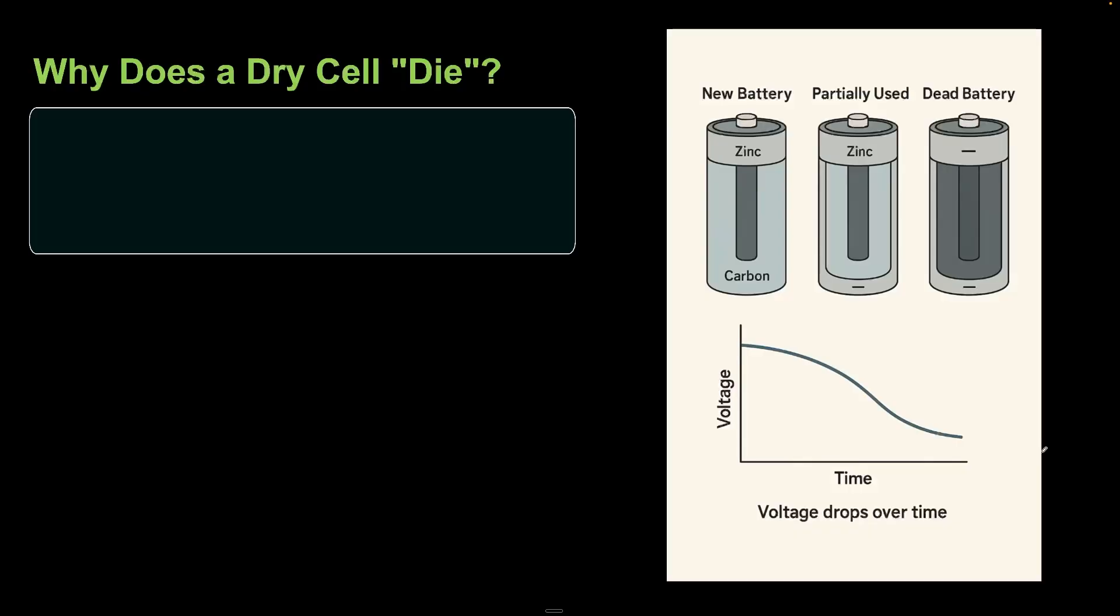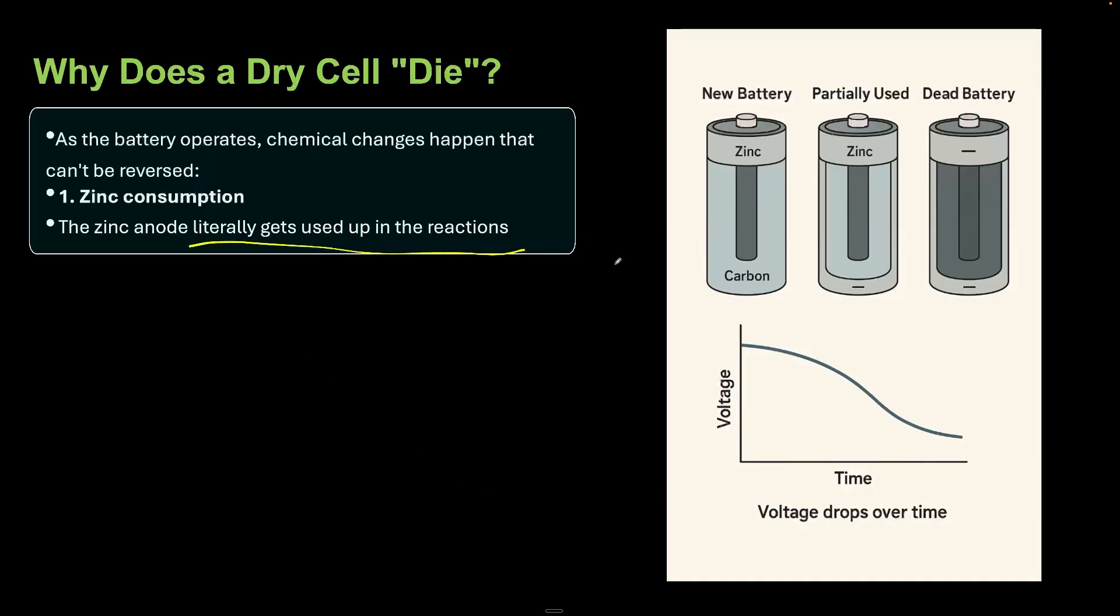Let's answer why a dry cell dies. As the battery operates, chemical changes happen that can't be reversed. The zinc gets used up in the reaction. If you measure the thickness of the zinc casing before and after the cell is used, you'll see no zinc remaining. That's how the voltage drops with time.